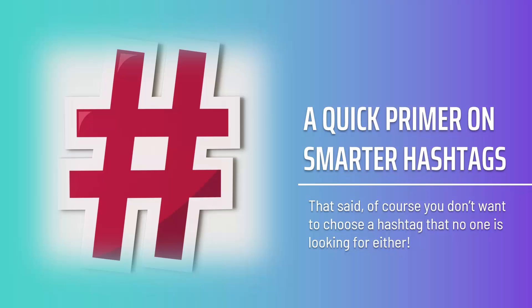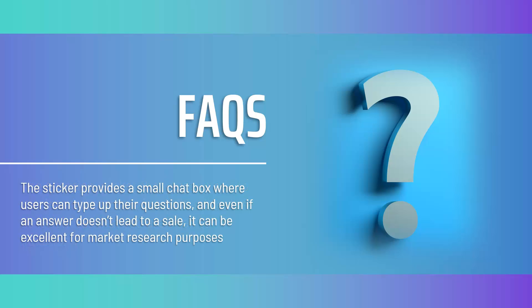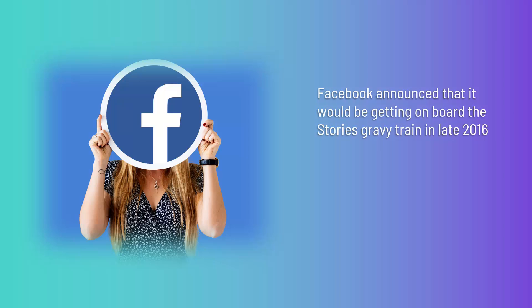The question sticker you can add to stories on Instagram is a brilliant feature — it denotes that you are open to questions. This 'ask me anything' story is a great place to clear up any misunderstandings around your products or services, as well as to help encourage people to make that final decision to buy. The sticker provides a small chat box where users can type their questions, and even if an answer doesn't lead to a sale, it can be excellent for market research purposes.